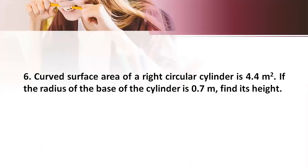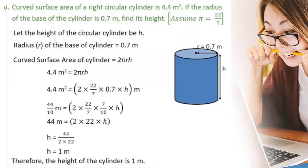Now let us go to the sixth problem. The curved surface area of a right circular cylinder is 4.4 meters square. If the radius of the base of the cylinder is 0.7 meters, we need to find its height. So we are given the CSA and radius, and we need to find the height h. The radius r = 0.7 meters. So curved surface area = 2πrh, that is 4.4 = 2πrh. Substituting the values of π and r and solving, we get h = 1 meter. Therefore the height of the cylinder is 1 meter.